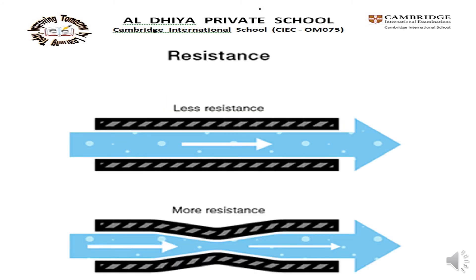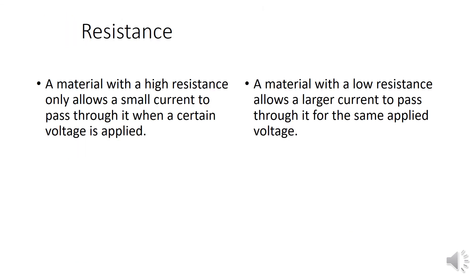In electrical items, this is represented by two circuits with equal voltages but different resistances. The circuit with the higher resistance will allow less charge to flow — meaning the circuit with higher resistance has less current flowing through it.